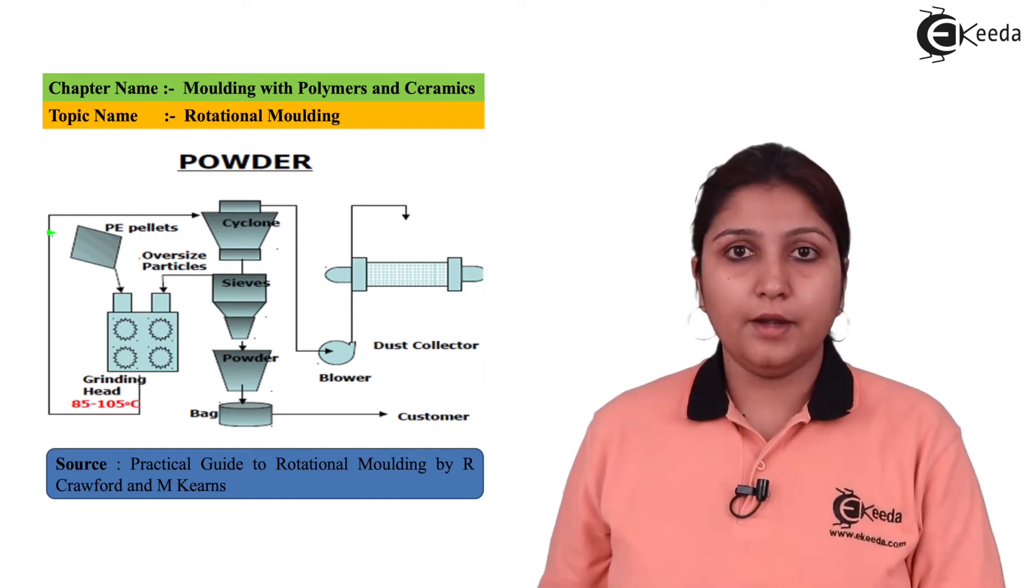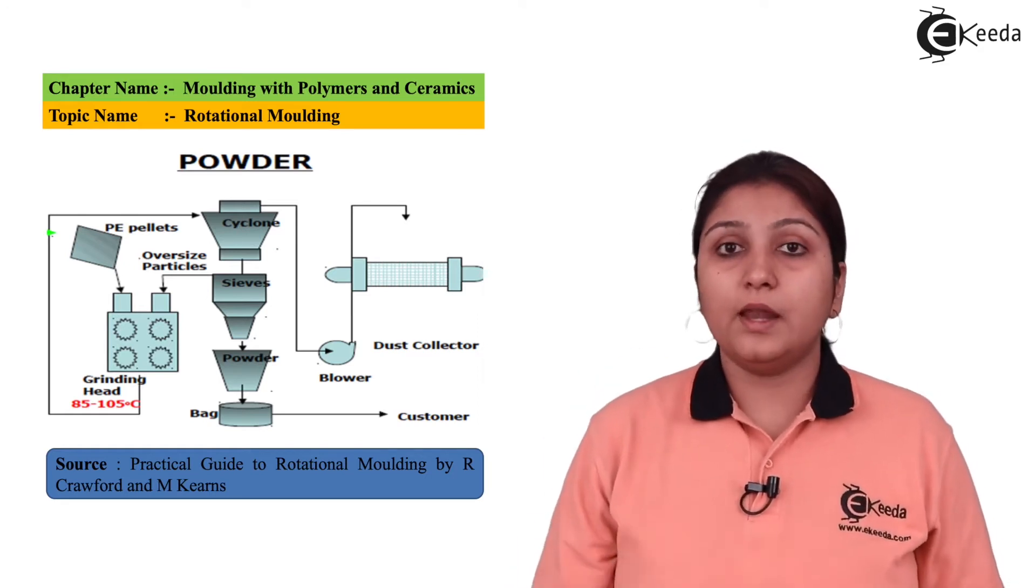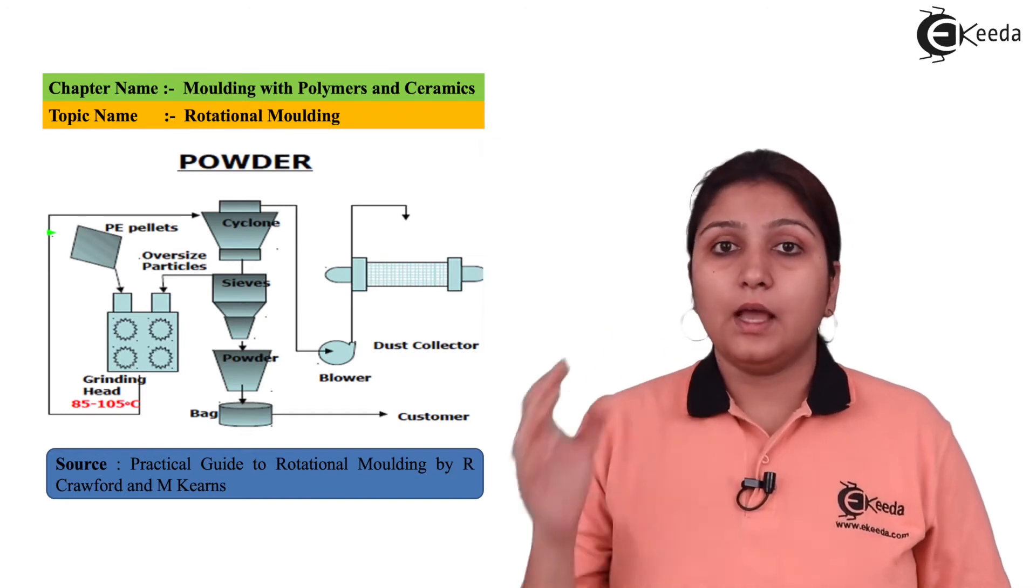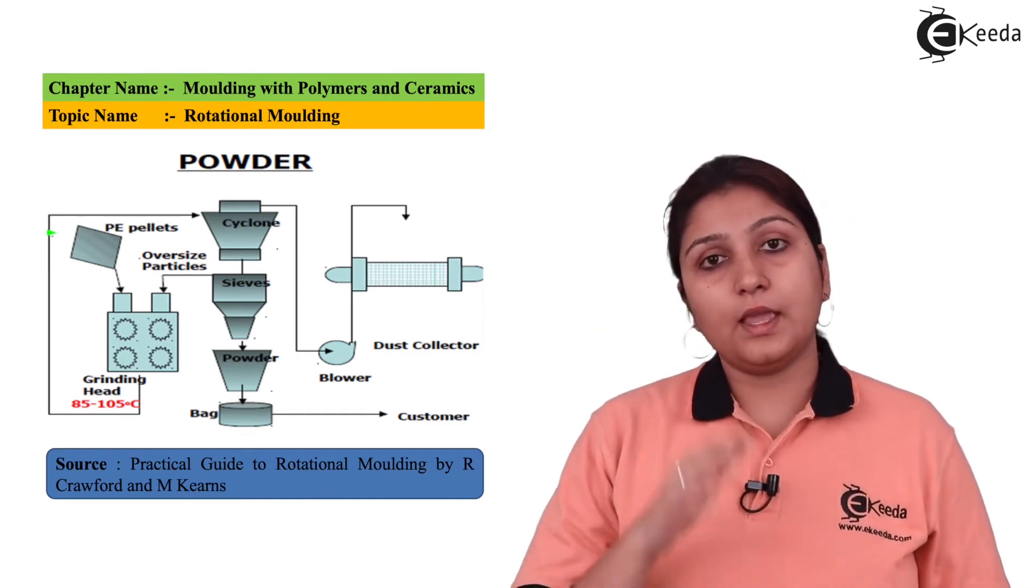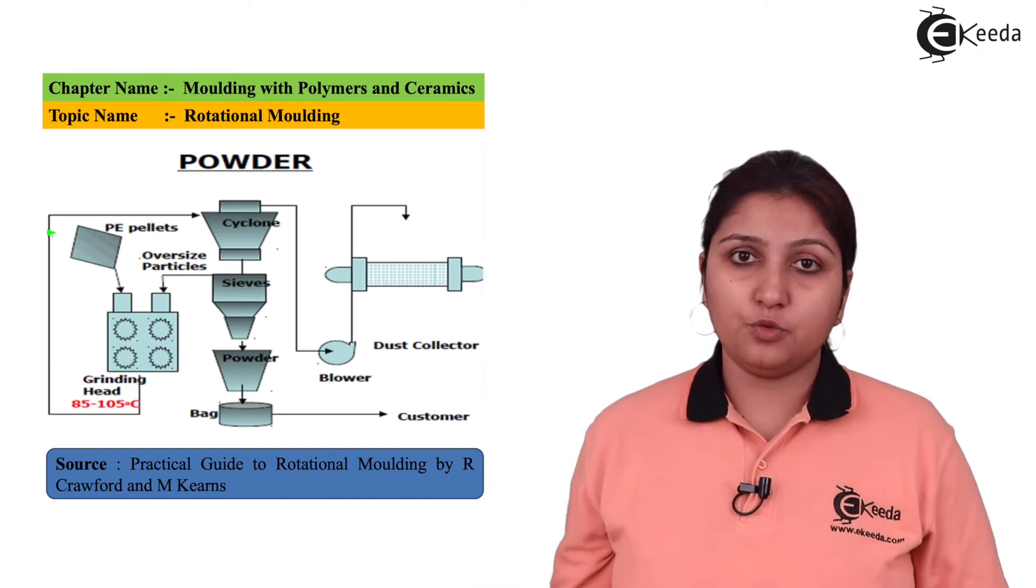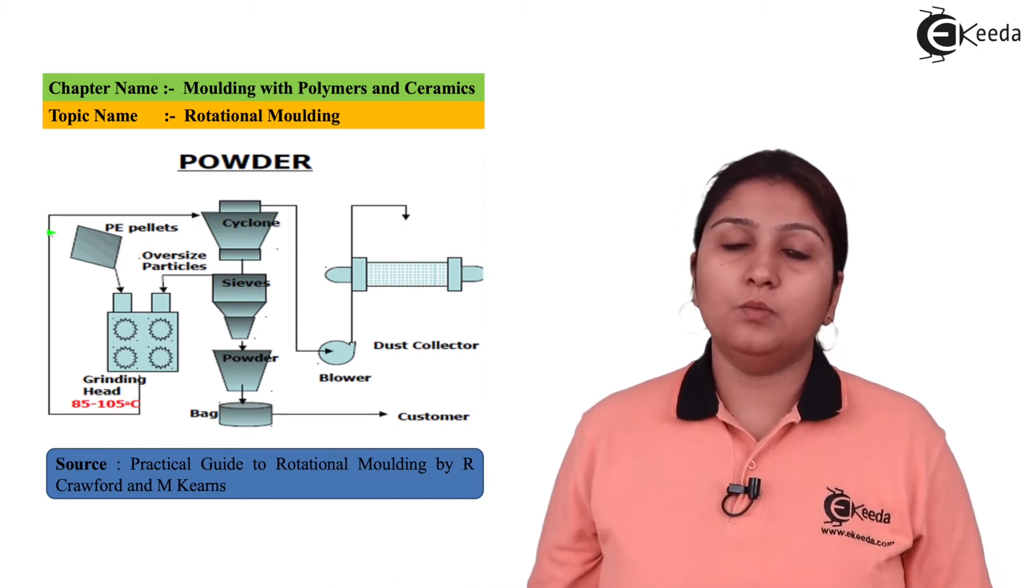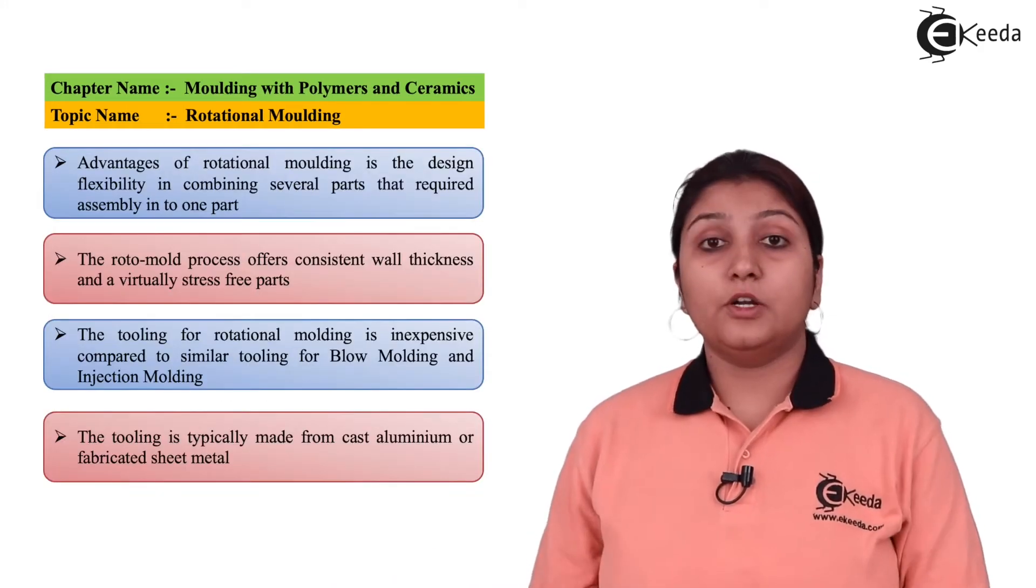Then it goes to a mold and bag. Excess air which is heated can be easily removed through this arrangement. In this way, rotational molding takes place. Now I'll talk about the advantages of rotational molding.